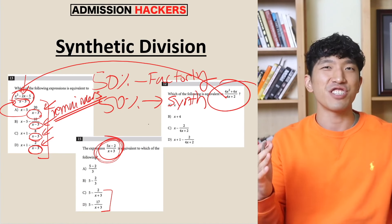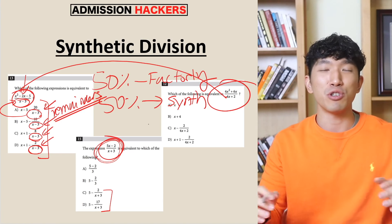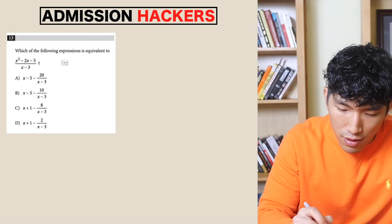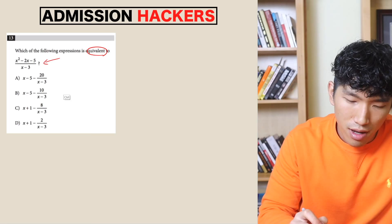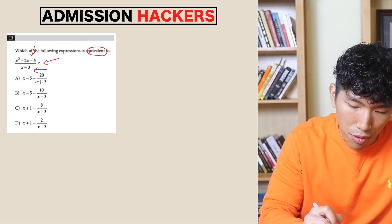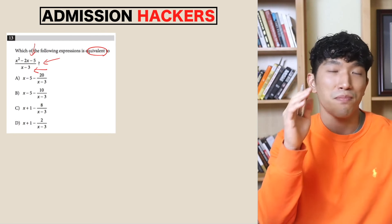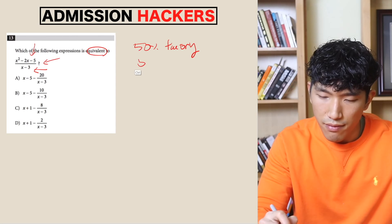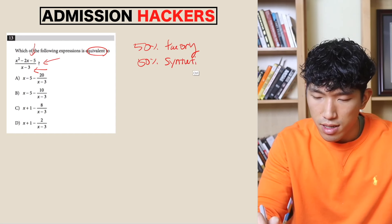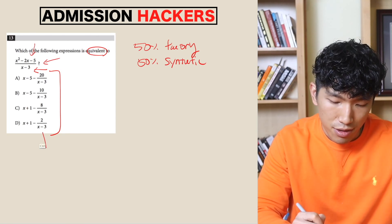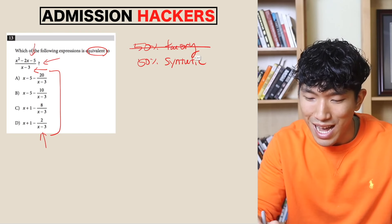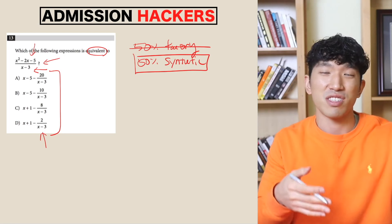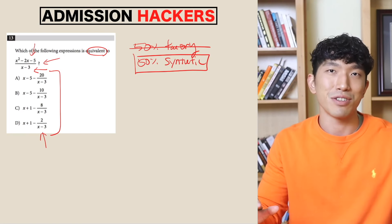So now that we can recognize them, how do we actually solve them? Let's go to this question. It says which of the following expressions is equivalent to this one. There's a polynomial on top and bottom. And if you look at all the choices down here, they all have a remainder, which means it's not going to be factoring — it's going to be synthetic division. So don't even bother trying to factor the top and cross out the bottom. It's a synthetic division question.